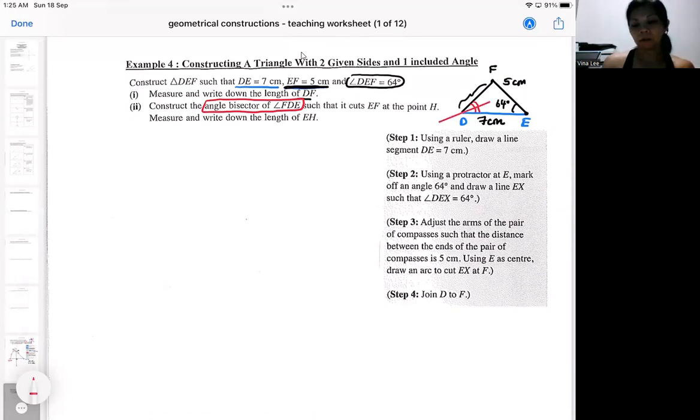So for this, some people are very stingy with your angle bisector. So don't be stingy. Make sure your angle bisector cut through. Cut through the whole diagram. And the description is, it will cut EF at H. So this is the H. And again, you'll be asked to measure EH. So all the measuring are meant to check your accuracy.